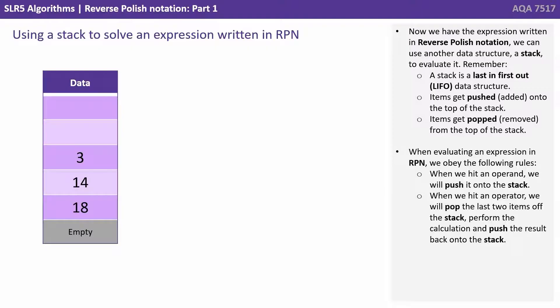Now we have the expression written in reverse Polish notation we can use another data structure, a stack, to evaluate it. Now remember a stack is a last in first out data structure. Items get pushed or added onto the top of the stack and items get popped or removed from the top of the stack. When evaluating an expression in reverse Polish notation we obey the following rules. When we hit an operand we'll push it onto the stack. When we hit an operator we will pop the last two items off the stack, perform the calculation and push the result back onto the stack.